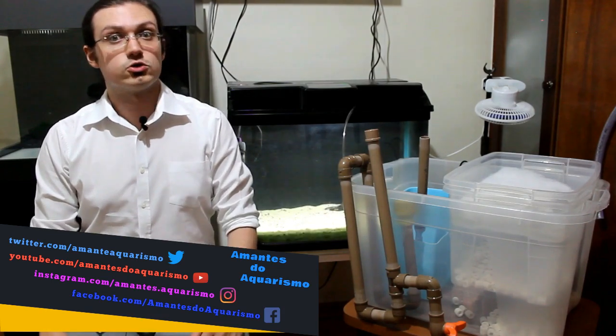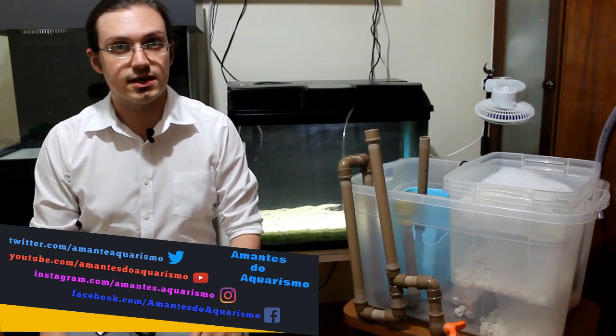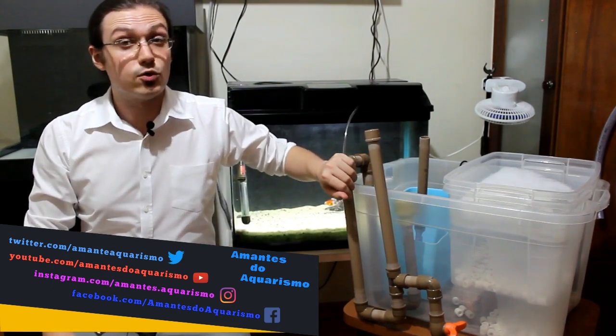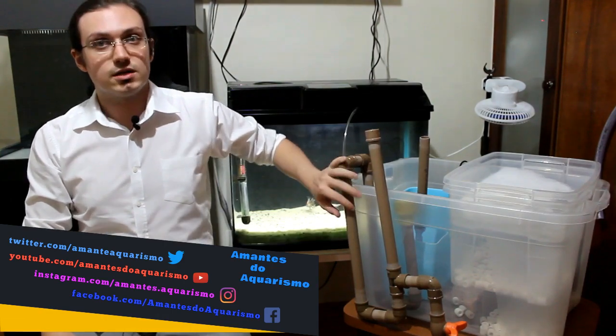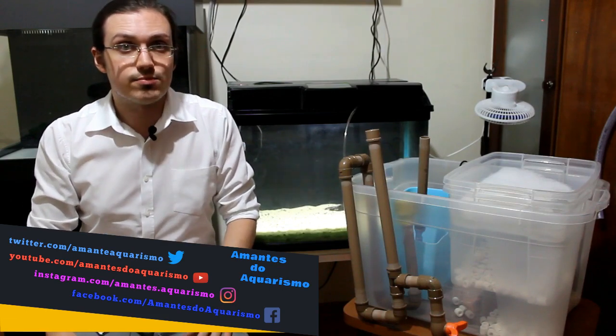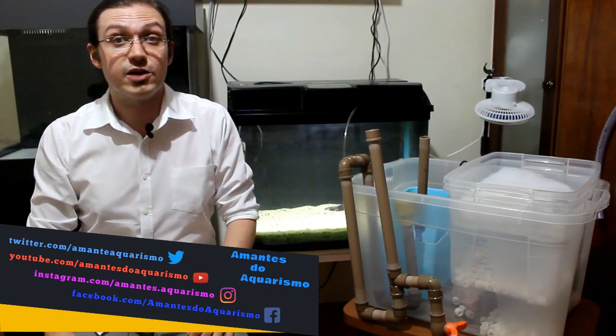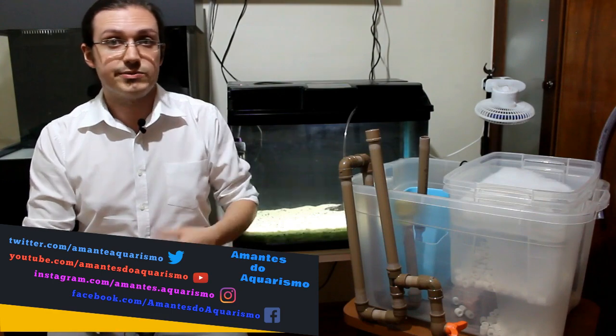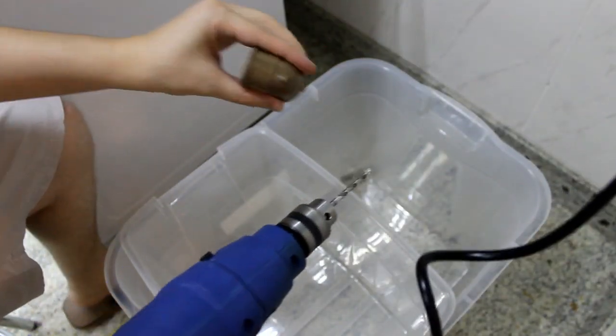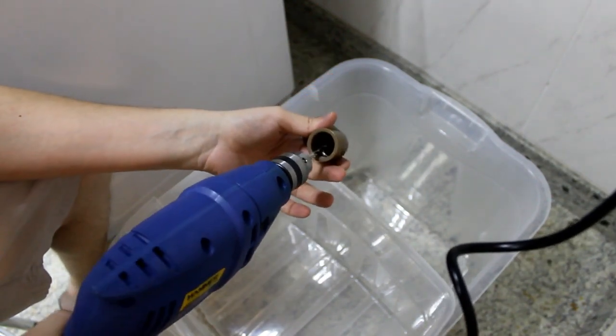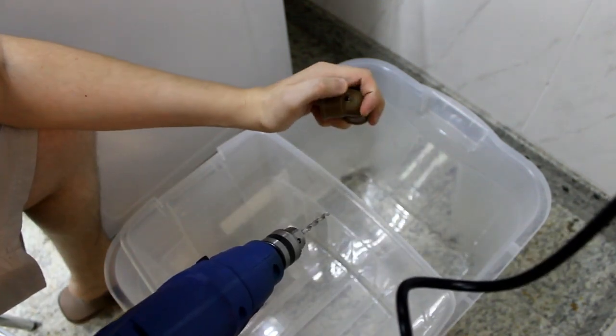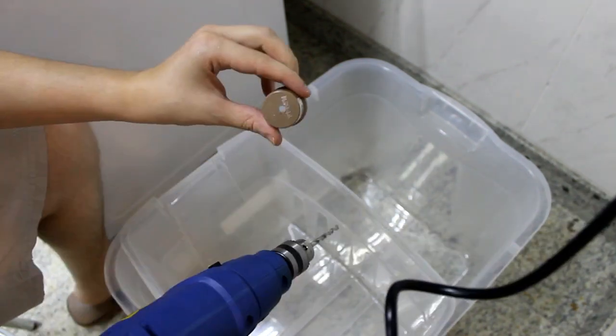Agora que temos a estrutura do nosso sump praticamente finalizado, iremos montar o sistema de overflow. Para quem não sabe, o overflow é um sistema de canos que consegue puxar a água do aquário com uma pressão suficiente para que não seja necessário ter nenhuma bomba. Água simplesmente cai por gravidade. Antes de mais nada, devemos fazer o furo em um dos joelhos e no cap. Vocês devem pegar uma broca de poucos milímetros e fazer um furo exatamente na parte de cima do joelho e também na parte de cima do cap.